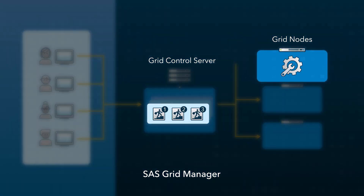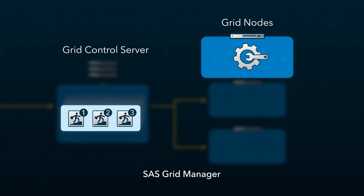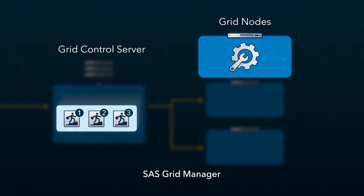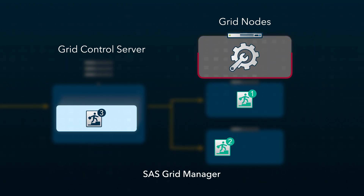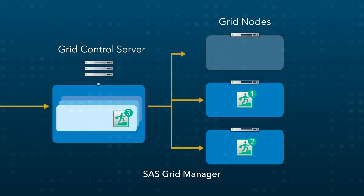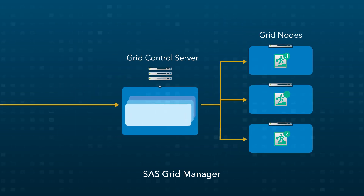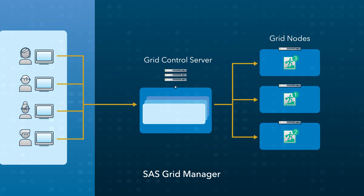An administrator can take a grid node offline for maintenance at any time. SAS Grid Manager is aware that the node is offline, so it will no longer route jobs to that node. When the maintenance is complete, the administrator restores the node to the grid and SAS Grid Manager is aware that the node is available for jobs.